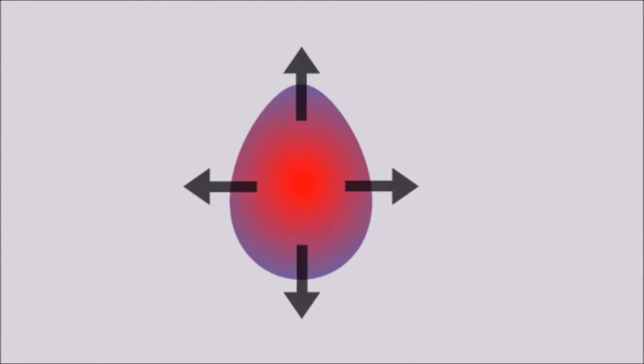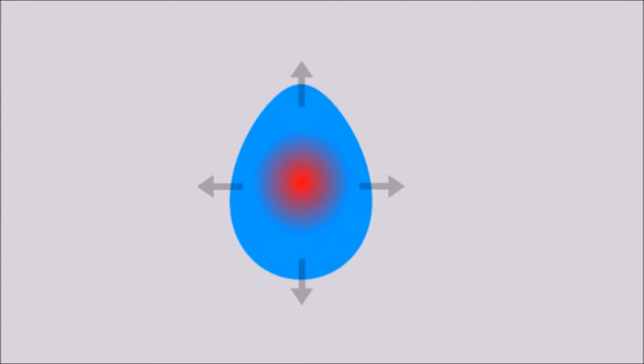Due to the big temperature difference between the outside and the inside of the egg, the heat is transported outwards. The center of the egg cools down the slowest, so we can see that the temperature changes depending on the position inside the egg.